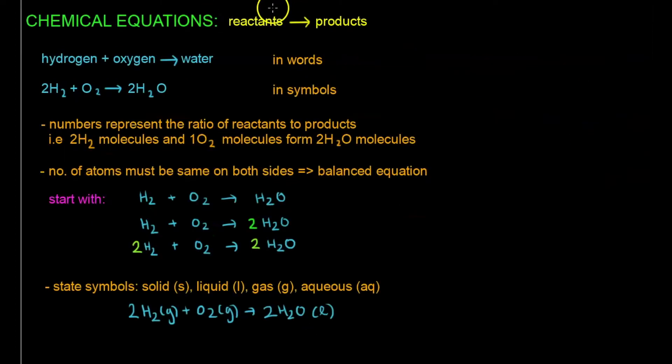Next we'll talk about chemical equations, which is really just reactants turning to products. Let's give an example, in words, we can write hydrogen plus oxygen giving us water, but in symbols, which is what we are more looking for, it's H2 plus O2 to give us H2O.